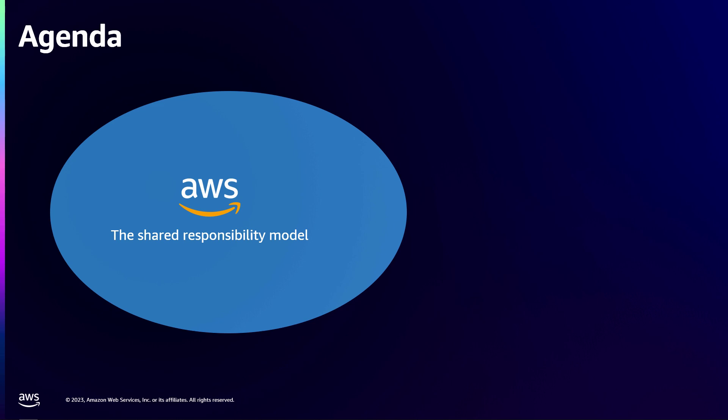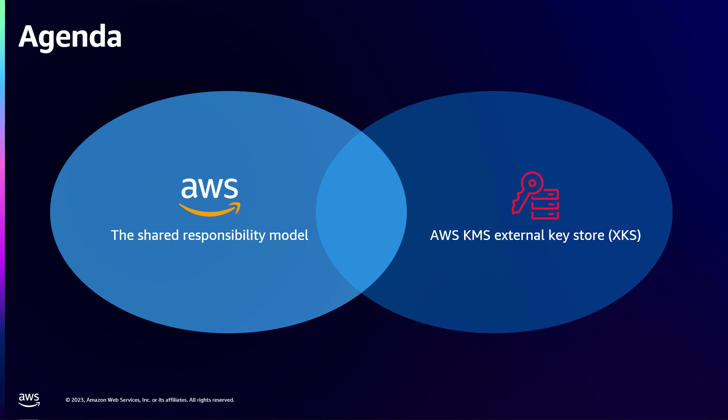Today's agenda will comprise of covering the shared responsibility model — something that we talk about with customers quite a lot. We'll also talk about a feature that we launched last year called external key stores, which is a feature in KMS. And then we'll talk about where those things intersect and what responsibilities you take on as you use that.